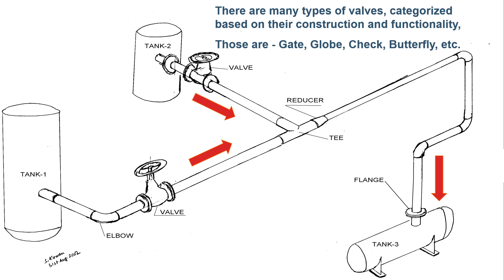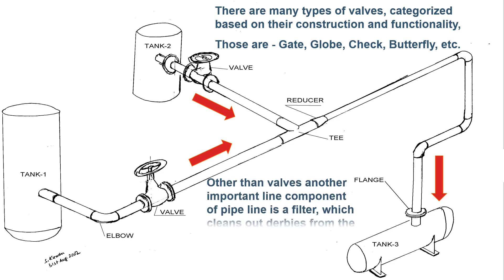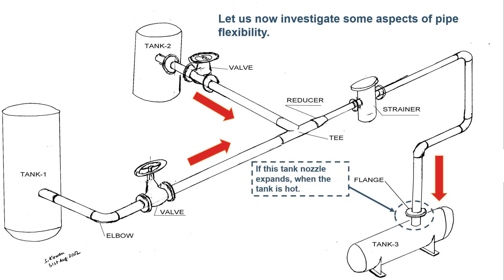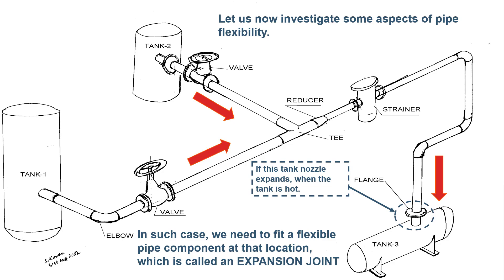Now we have a system over which we have control. But we need a few more components to meet various functional requirements to get the desired product. One requirement is to remove any debris from the fluid — filters and strainers are used for that purpose. Flexibility is also very important for the safe and reliable operation of the piping system. Consider that tank 3 handles hot fluid, which may lead to thermal expansion. Just like the small gap between rail tracks that allows expansion and prevents damage, we need a similar arrangement here. We need a piping component known as an expansion joint to solve the thermal expansion issue.